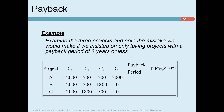Now we look at an example: examining three projects and noting the mistake we would make if we insisted only on taking projects with a payback period of two years or less. With that constraint, we'd miss that in year three we make five thousand dollars, which gives a huge return. Project A has a positive NPV, B has a negative one, and C has a positive one. The payback period may take longer, but that's where you have to look at the cash flows and see how large they are on a present value basis.